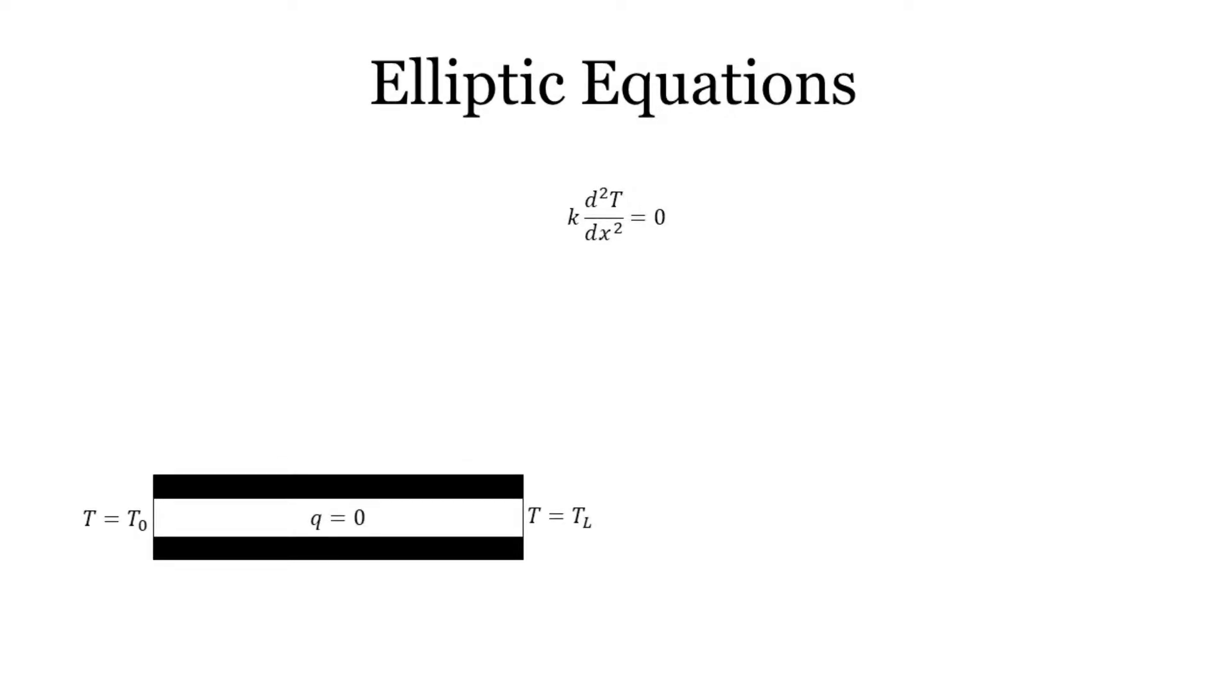An example is the steady state heat distribution along a rod. Imagine we have a 1D rod of length L with conductivity K and no internal heat generation. N1 is held at T0 and N2 is held at TL.